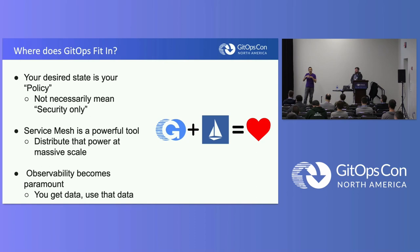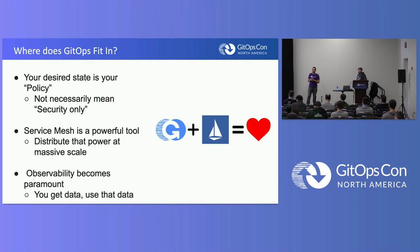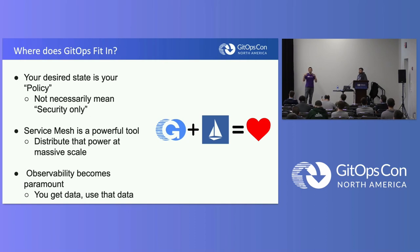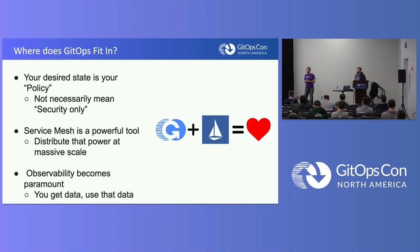Policy doesn't necessarily mean security in terms of authorization and authentication — although that's a bigger part of it. I'm talking about it more holistically. Service mesh is a powerful tool that really helps you scale, but it gets really complex when you want to do it massively at scale. That's kind of where GitOps comes into play — you want to distribute that power and have ultimate control across all your systems.